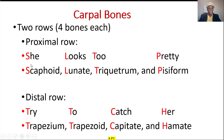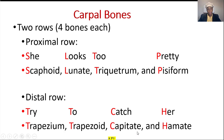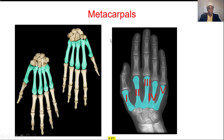The mnemonic to remember them: 'She looks too pretty' — scaphoid, lunate, triquetrum, and pisiform. 'Try to catch her' — trapezium, trapezoid, capitate, and hamate.